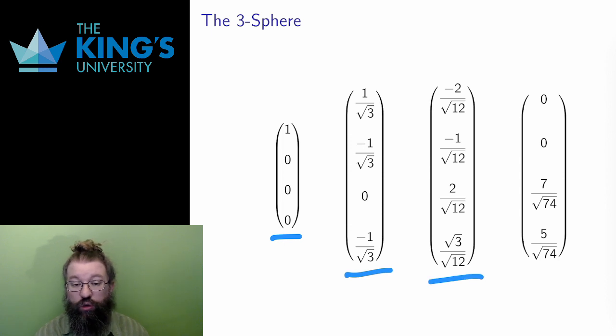In the third, the denominators are all 12 after squaring, and the numbers are 4 plus 1 plus 4 plus 3 is 12, to give 12 over 12 or 1. And in the last, the squares are 49 over 74 plus 25 over 74, which is 74 over 74, which is 1. Via the algebra, I know that these are all points located on the sphere in R4. And this is pretty remarkable. I'm actually doing geometry in four dimensions.